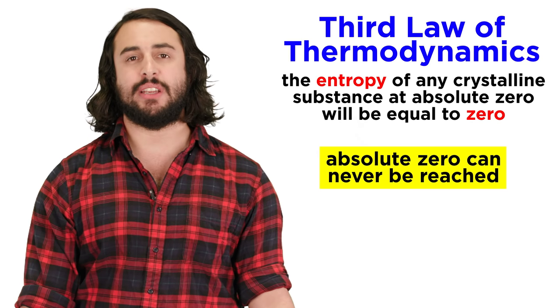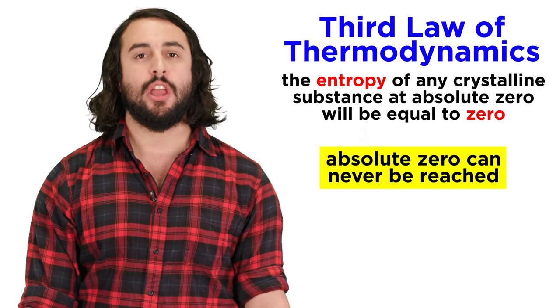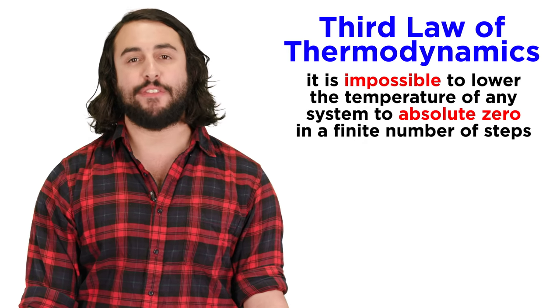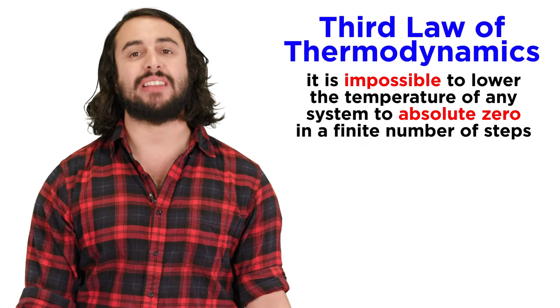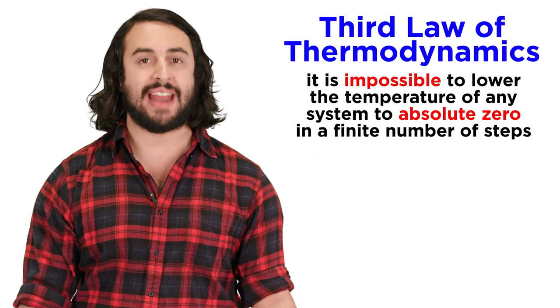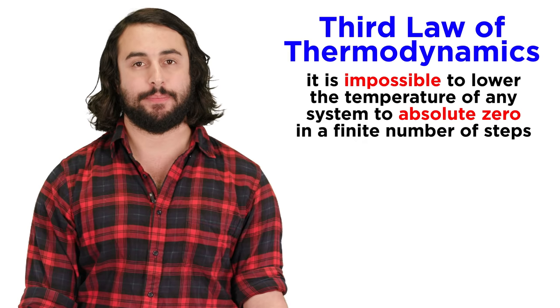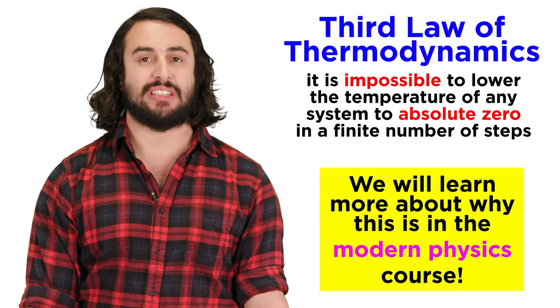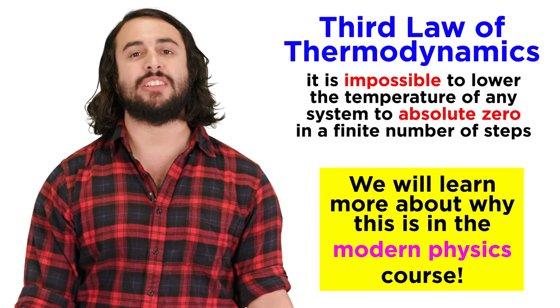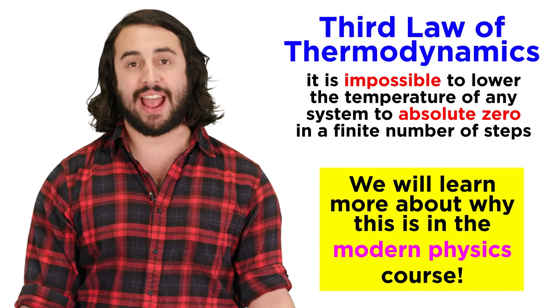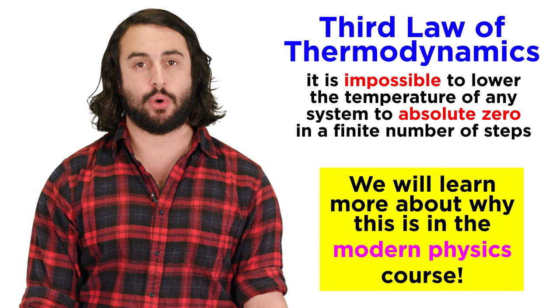However, absolute zero can never truly be reached, which is communicated in a rephrasing of the third law, which states that it is impossible to lower the temperature of any system to absolute zero in a finite number of steps. A satisfactory analysis of this law will require the quantum mechanical zero-point energy, and will thus have to wait until the modern physics course.